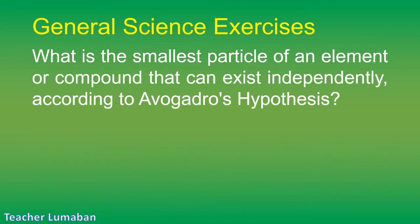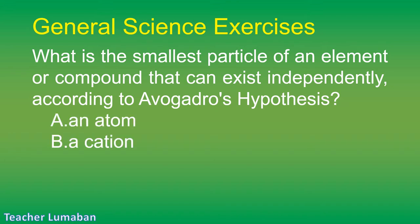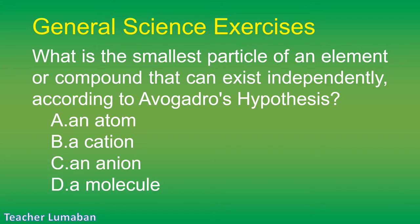What is the smallest particle of an element or compound that can exist independently, according to Avogadro's hypothesis? Letter A: an atom. Letter B: a cation. Letter C: an anion. Letter D: a molecule.